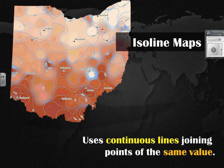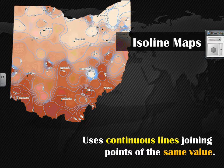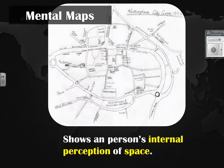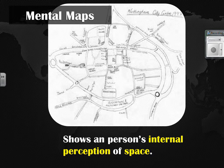ISO line maps are kind of interesting — they may be like a topographic map where you have elevation changing, but the line changes based on the data that is there. You might have an ISO line map based around population as well, and the lines are given different values that change when the value changes. Mental maps are a big deal — we use them more than we're probably aware of. Whenever someone asks how to get to your house, you're visualizing in your mind a map of how to get there — even if it's not on paper, that is still a mental map.